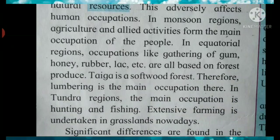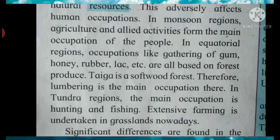In monsoon regions, agriculture and allied activities form the main occupation of the people. And in equatorial regions, occupations like gathering of gum, honey, rubber, lac, etc. are all based on forest produce. Taiga is a softwood forest. Therefore, lumbering is the main occupation there. Children, lumbering means it is a business or trade of cutting, transporting, preparing or selling of timber. As taiga is a softwood forest, the main occupation of the people there is to cut that wood and then transport it or sell it.